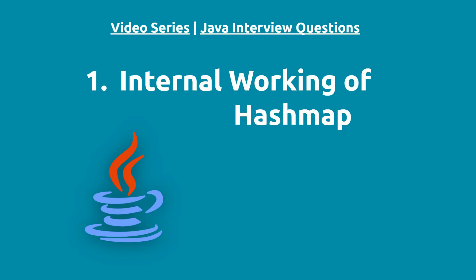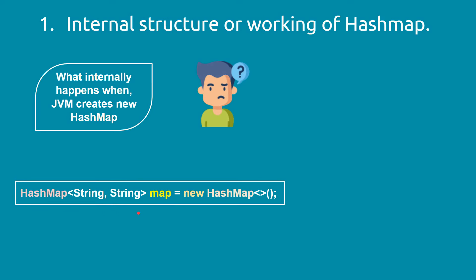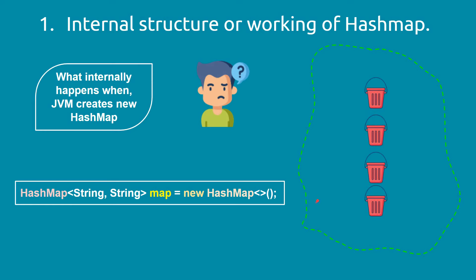Let's start with the most common interview question: the internal working of HashMap. To understand this, we should know what happens when JVM executes a line creating a new HashMap. When we ask JVM to create a new HashMap, it creates it in the heap memory, because all Java objects are created inside the heap memory, and HashMap is an object. JVM will create 16 buckets in heap memory.